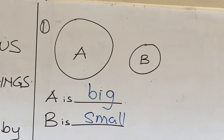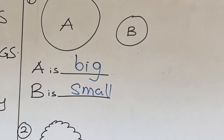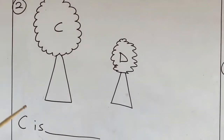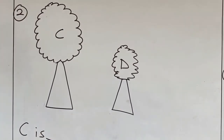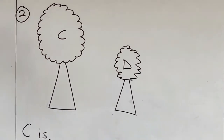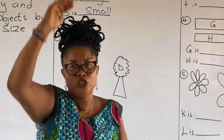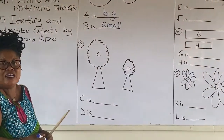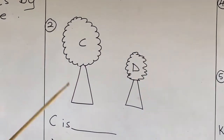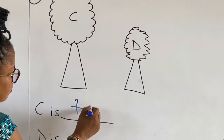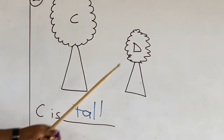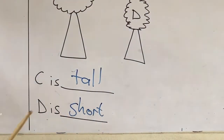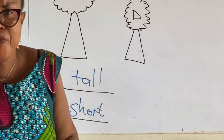We are going to compare these two trees: Tree C and Tree D. Because they are standing upright, we are going to use tall and short. So comparing C and D: C is tall, D is short — because they are standing upright.